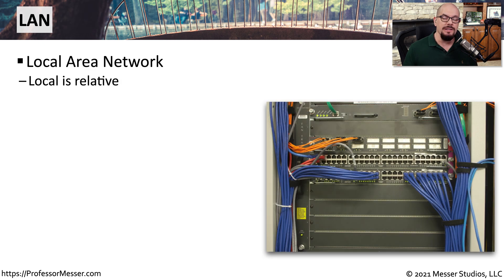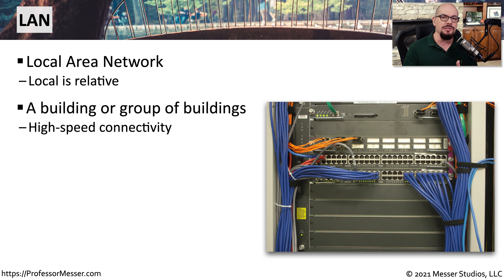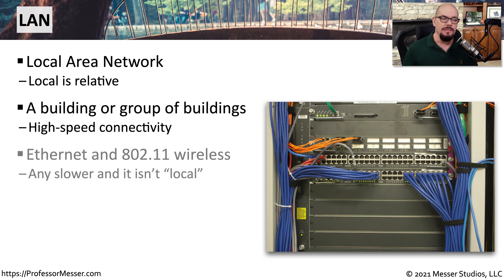If you're working inside an office or working from home, that network is a local area network. It's local because the network you're using is usually within the same building. This could also be the network within a single building between different floors. Generally speaking, a local area network will have relatively fast throughput, using 802.11 wireless networks and Ethernet connectivity for high-speed communication.